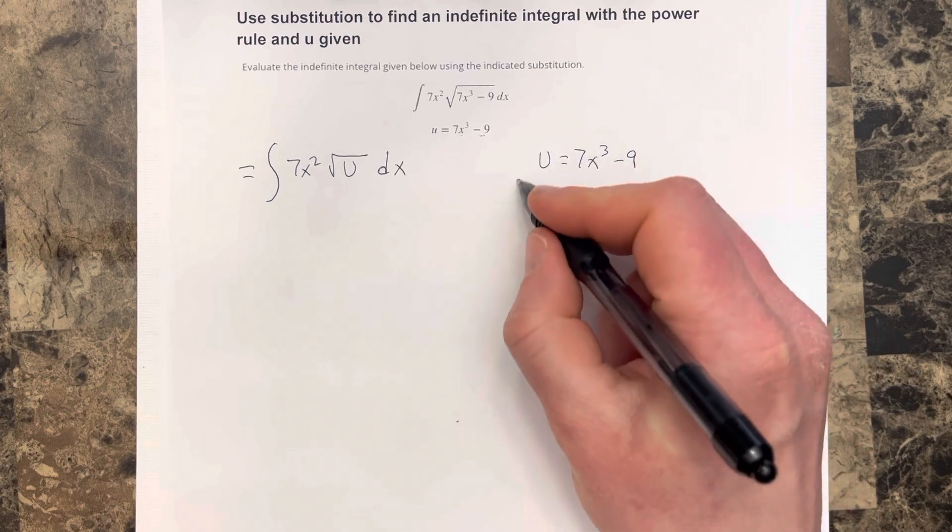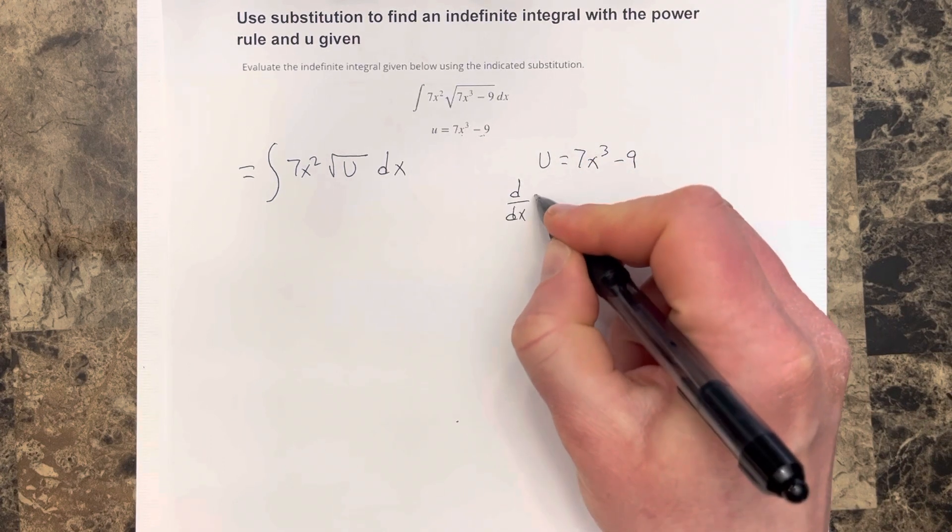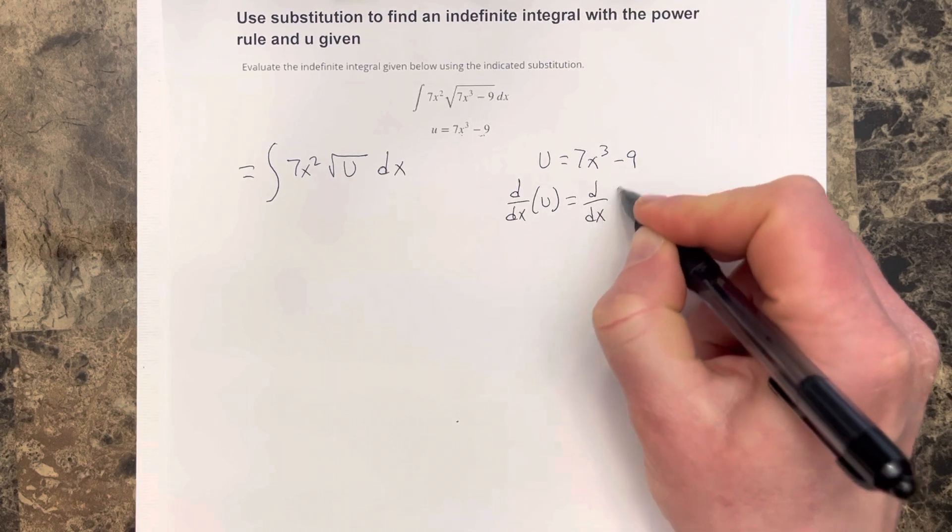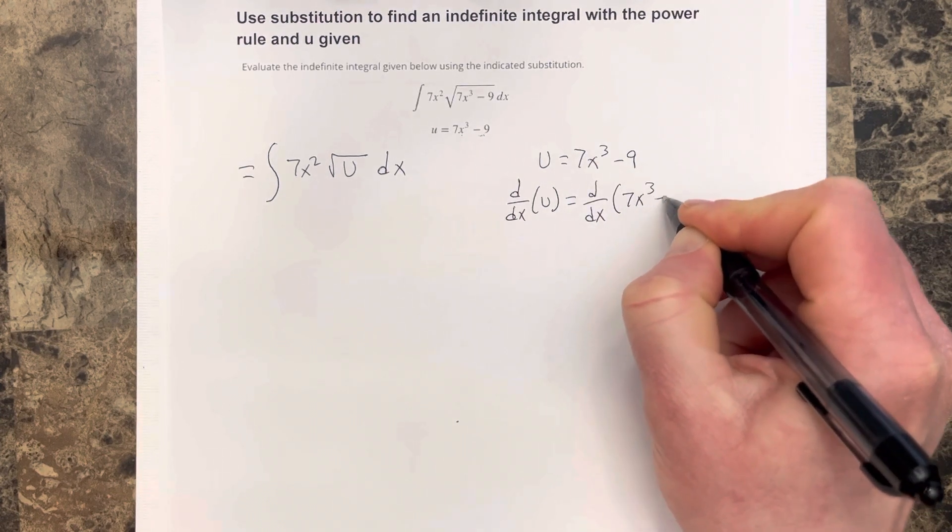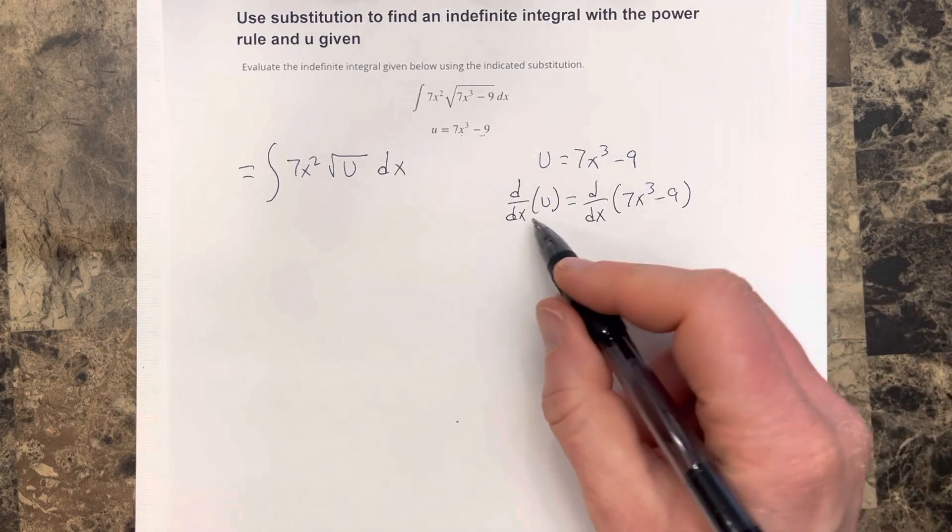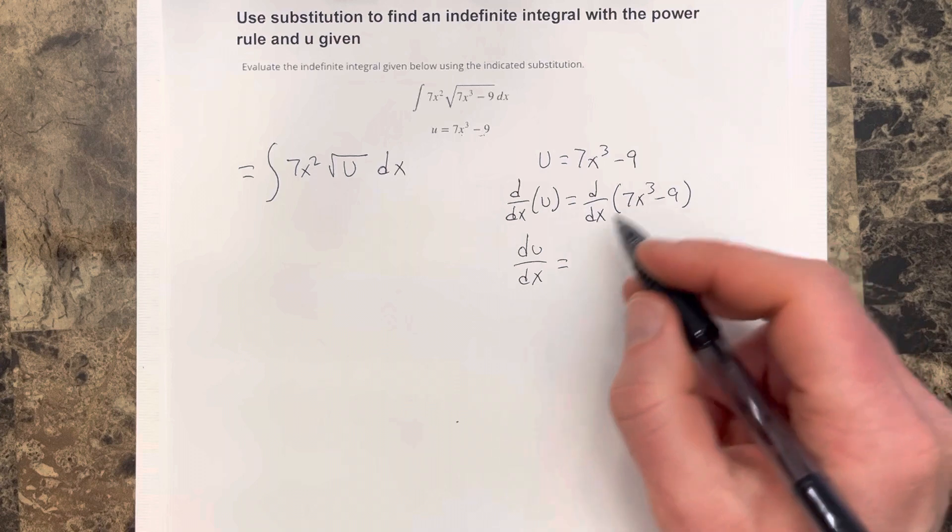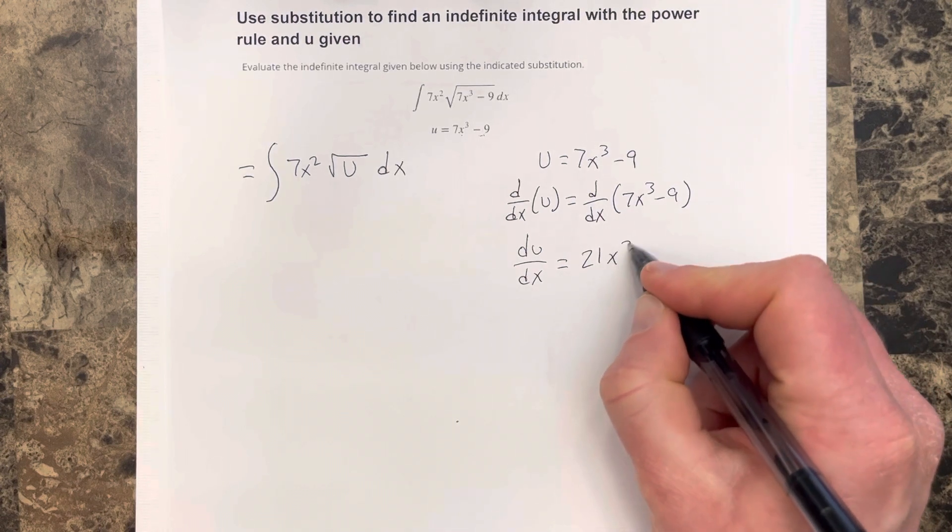And I'm going to take the derivative on each side. So the derivative with respect to x of u is equal to the derivative with respect to x of 7x cubed minus 9. This gives you du over dx is equal to the derivative here is 21x squared.